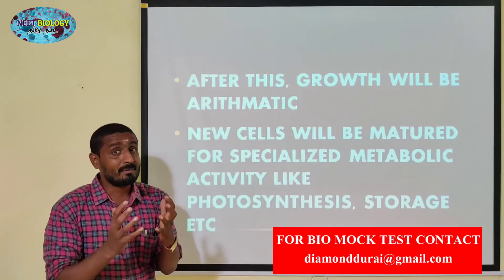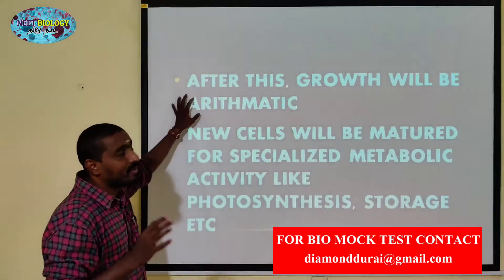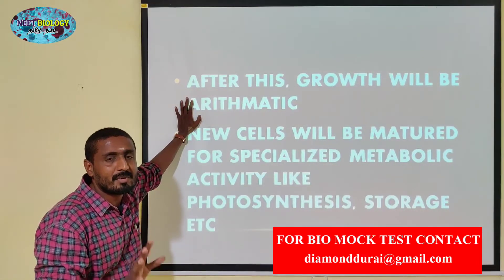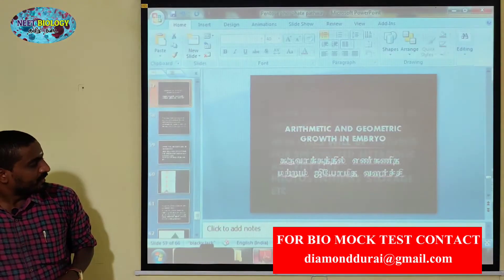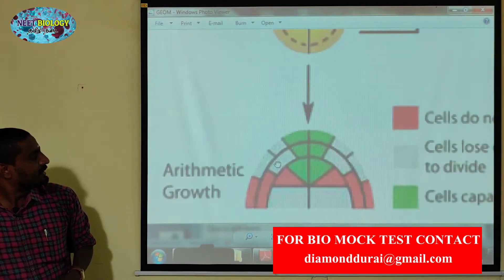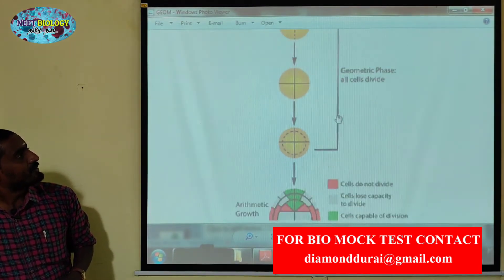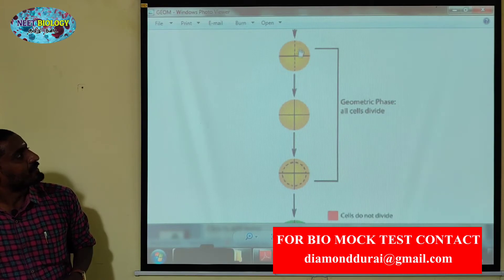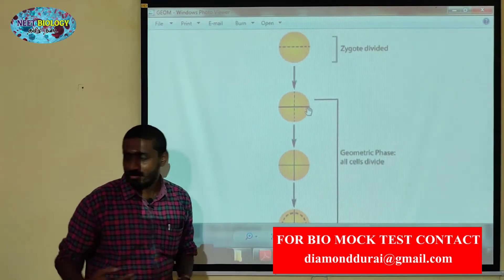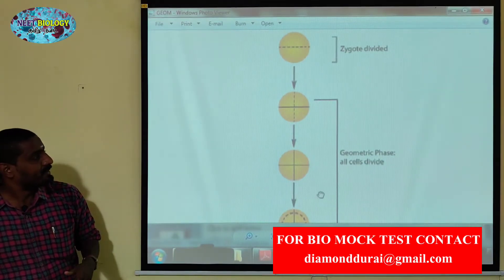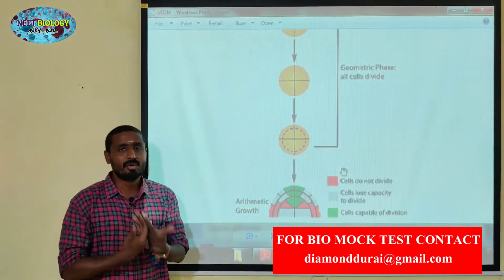That is geometric growth and arithmetic growth combined, called arithmetic growth. The root tip will be fully arithmetic. This is an embryo with a geometric phase. There are different functions. This is embryo development in a dicot seed, and this is embryo development in a monocot seed.